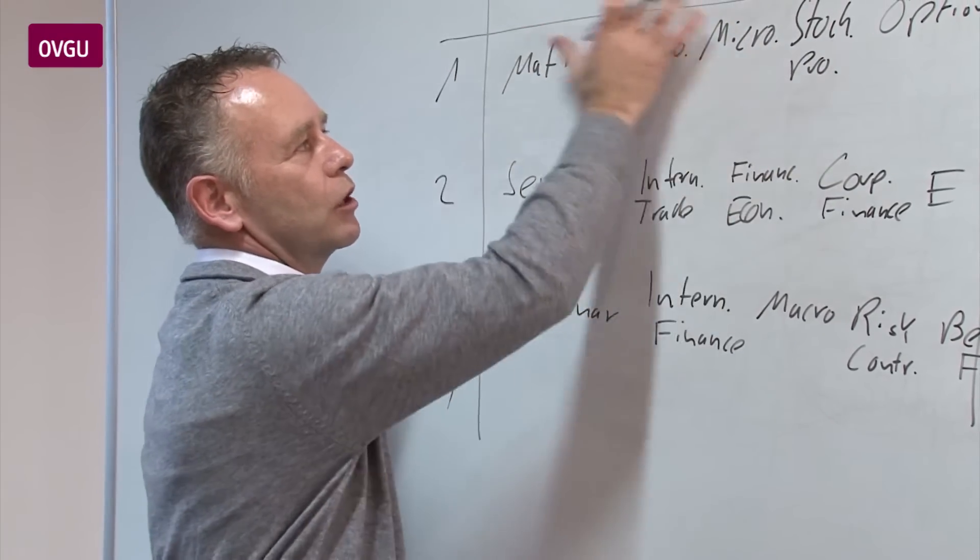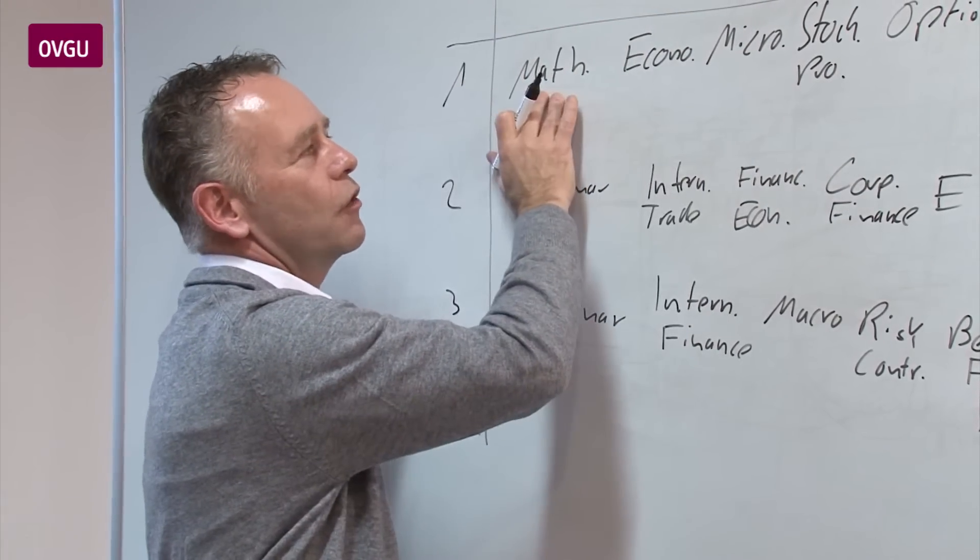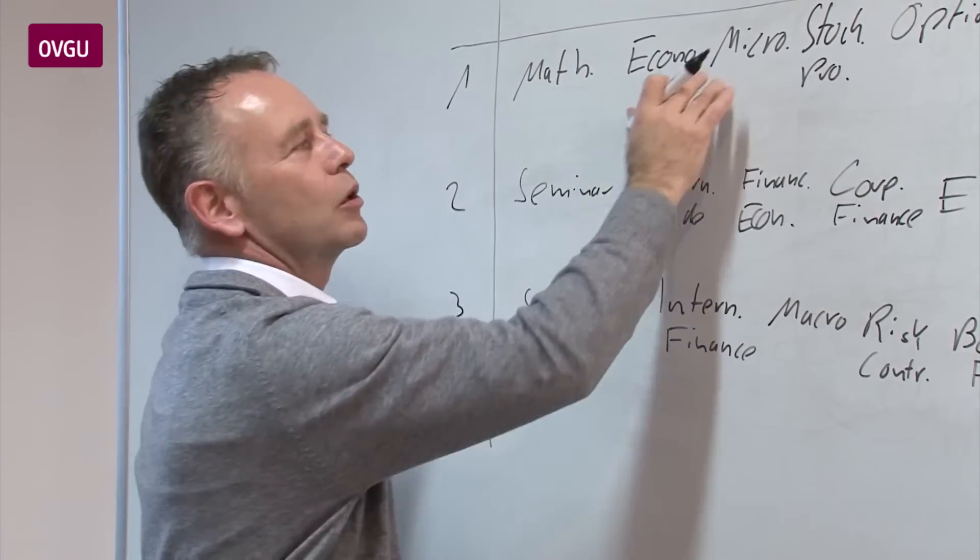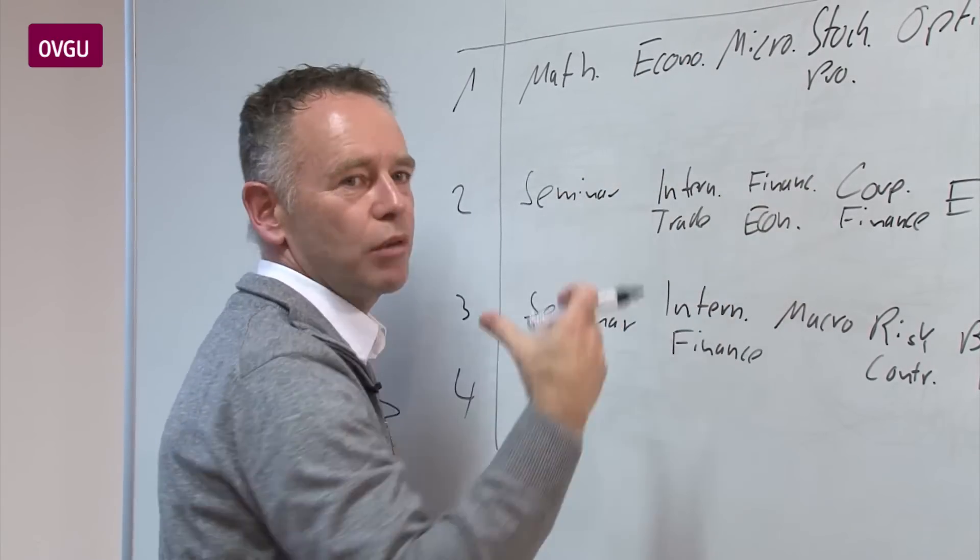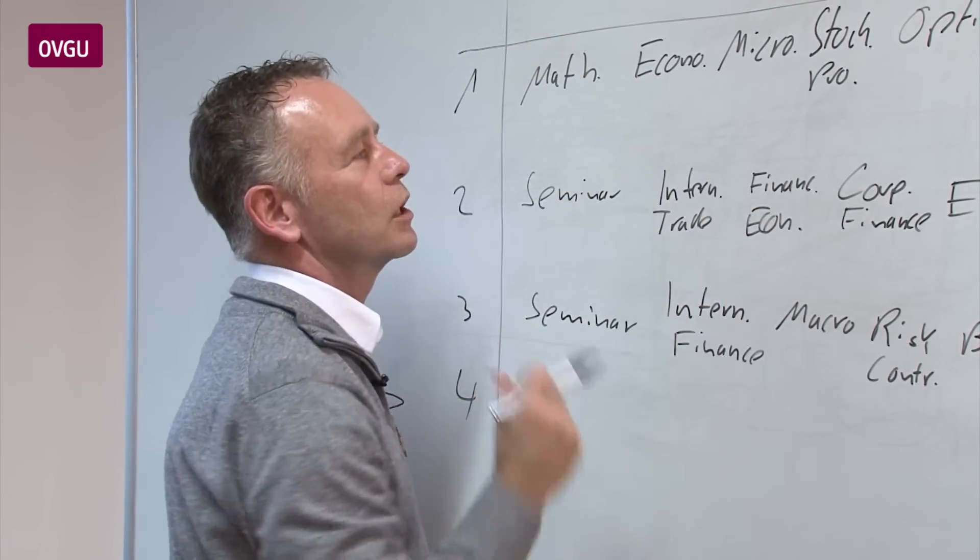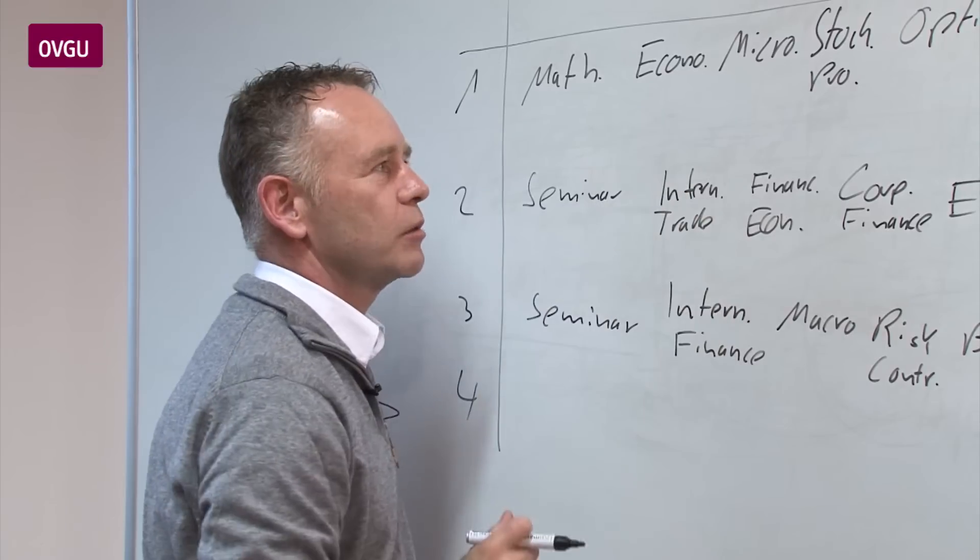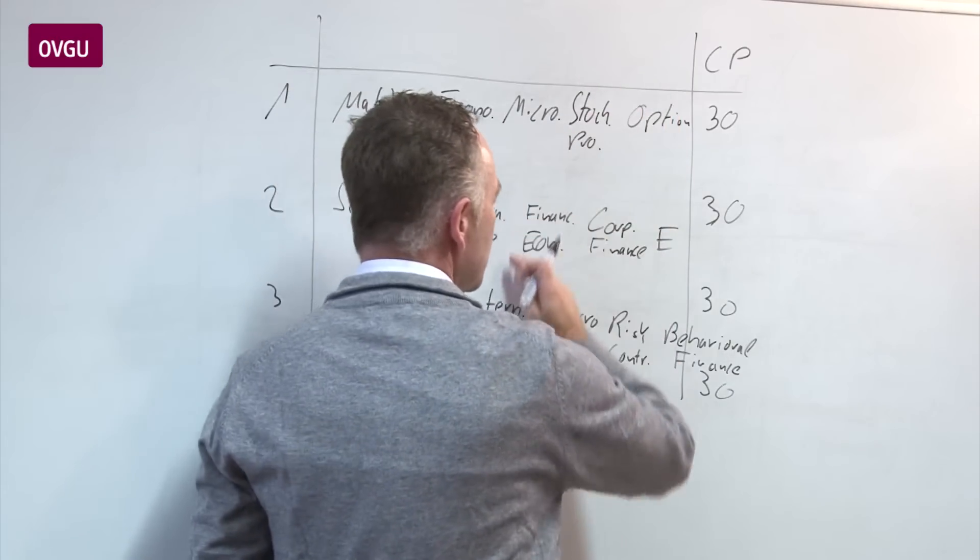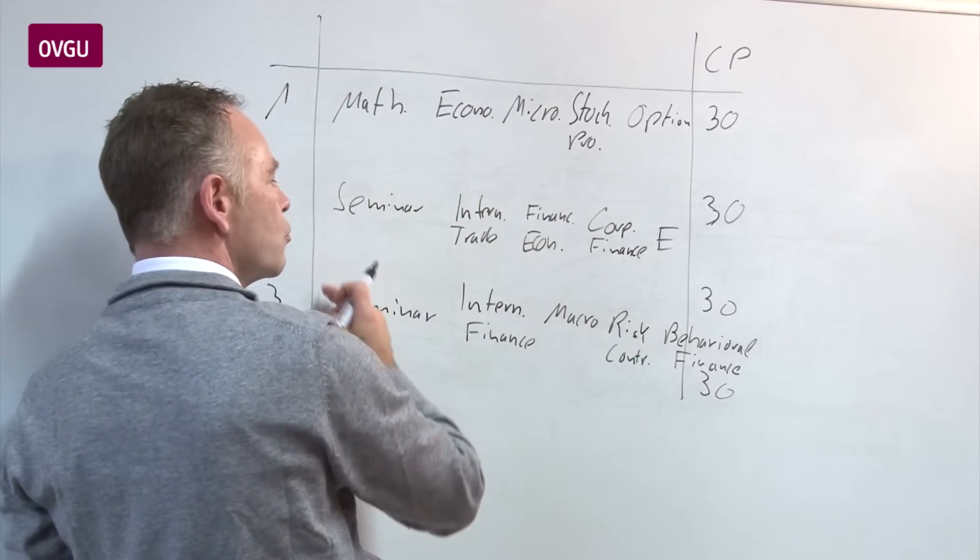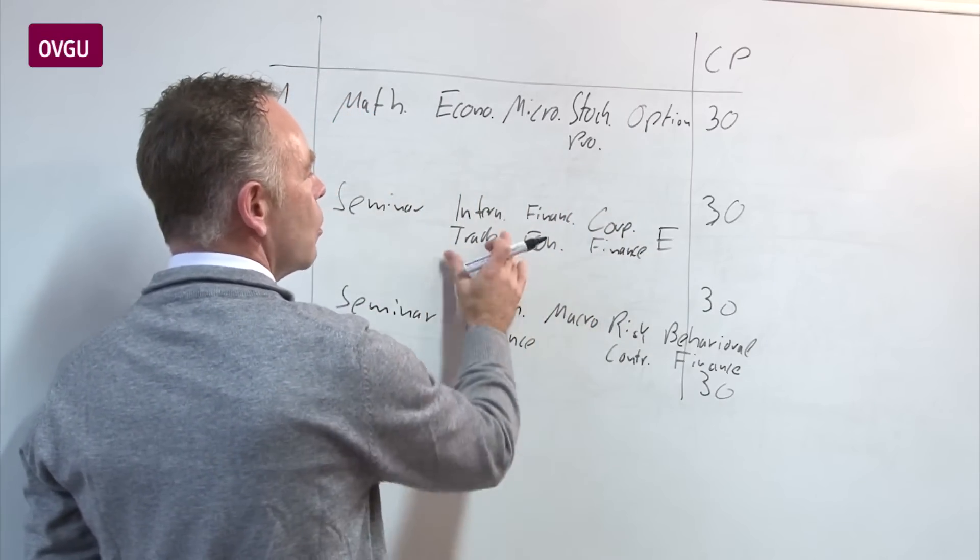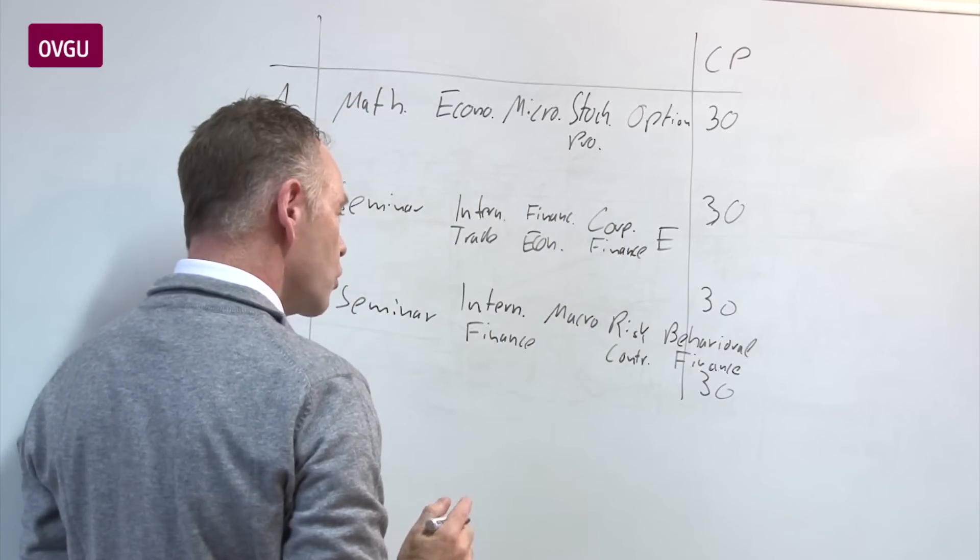So the whole thing is related. We have methods here, math for example, econometrics. You can also find, can also interpret microeconomics or stochastic processes as the basis of what we are doing in the further semesters. We have a big program in finance and this big program in finance is related to macroeconomic analysis but also a finance focus.